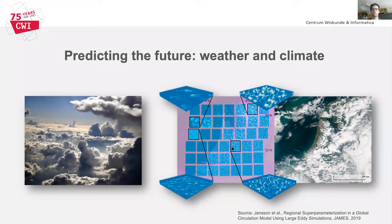Our group works on the development of algorithms that will help us to predict the future of our weather and climate. A particularly important question that needs to be addressed is how to represent clouds in climate models. This is a difficult problem because the simulation of clouds on the computer based on physical models is computationally very expensive, and at the same time the amount of measurement data is very limited, so we cannot rely on purely data-driven techniques.